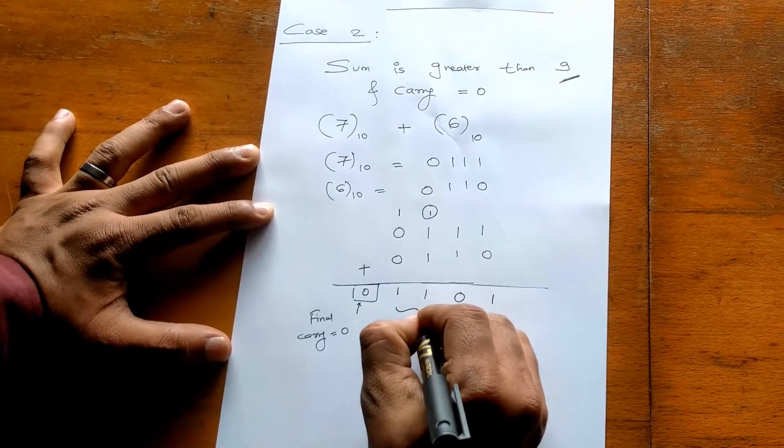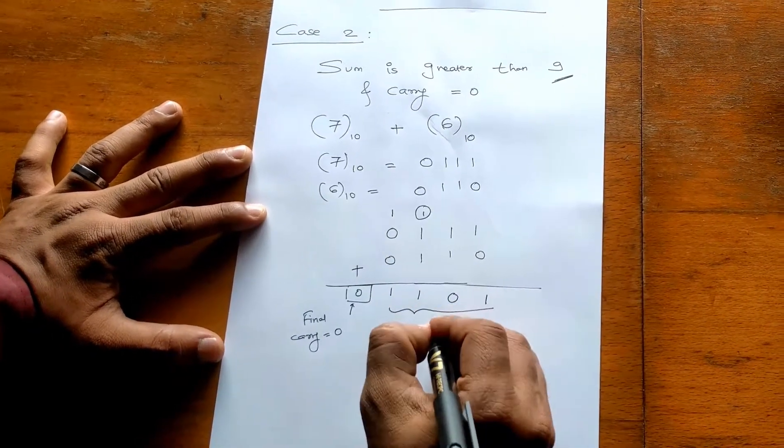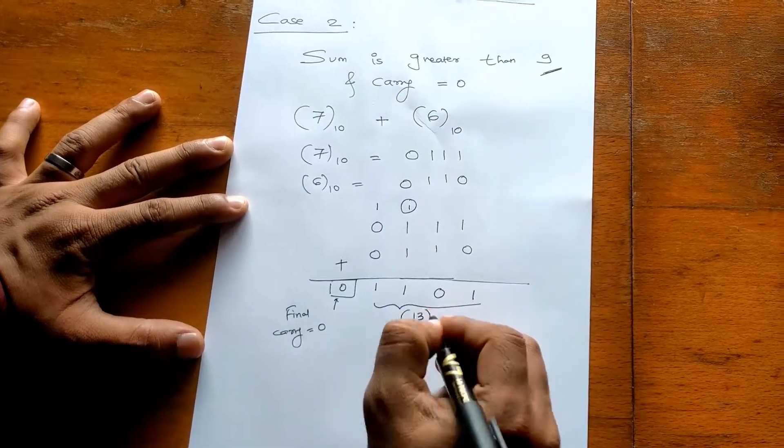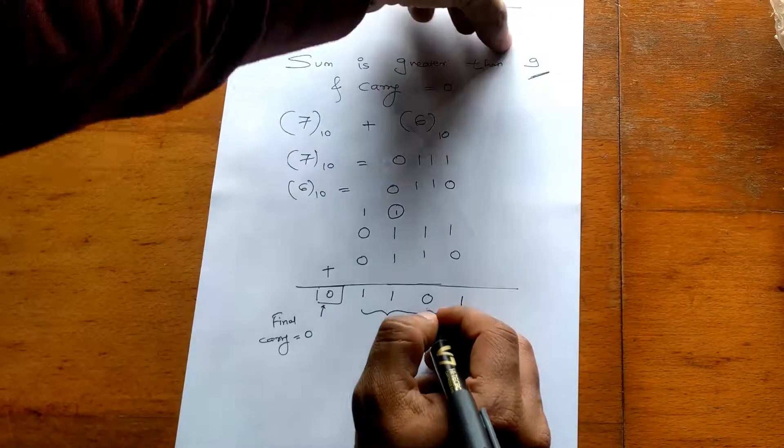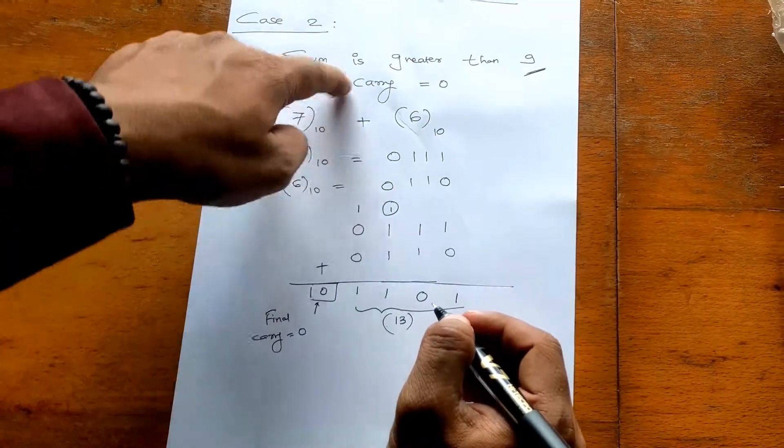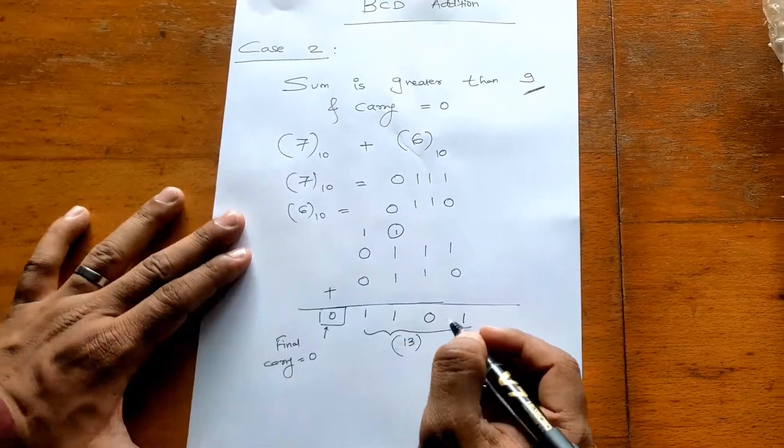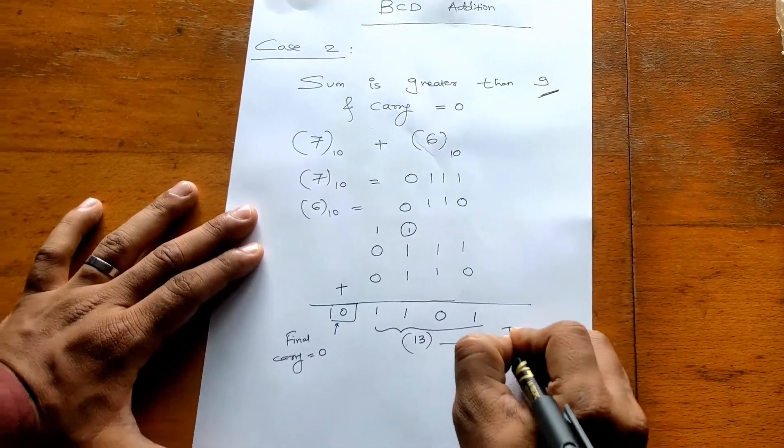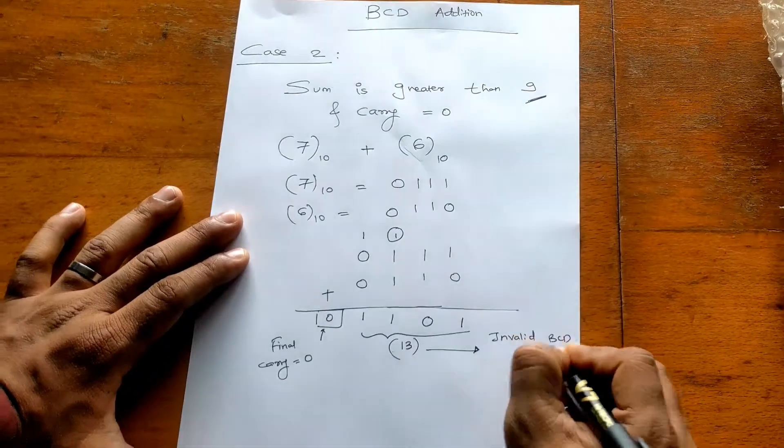But your answer or sum is 13. So in Case 2, sum is greater than 9, that is 13, and carry equal to 0. Right now this answer is invalid BCD answer.